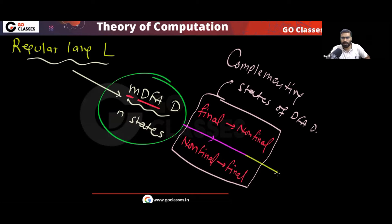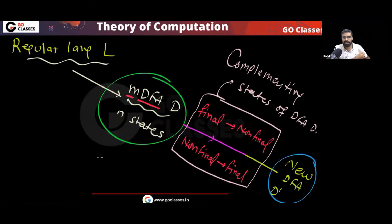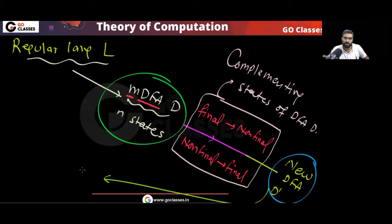You will get a new DFA — let's call it DFA D-dash. What will be the language of this new DFA? If you take the minimal DFA for a regular language L and complement the states, you get a new DFA whose language is L complement. And notice: the number of states does not change when you complement the states.